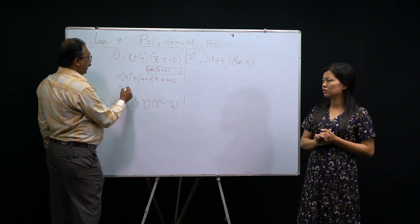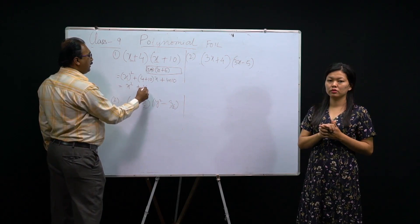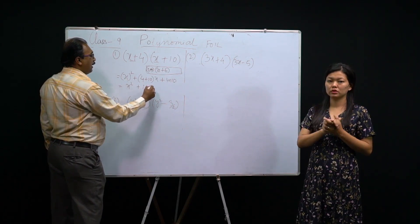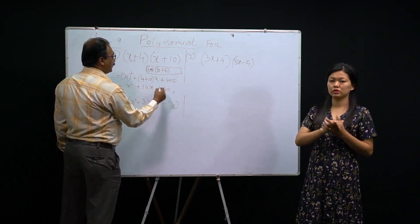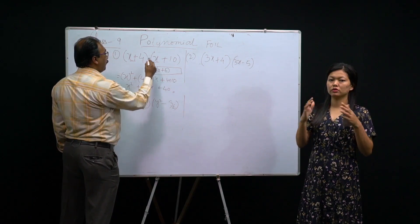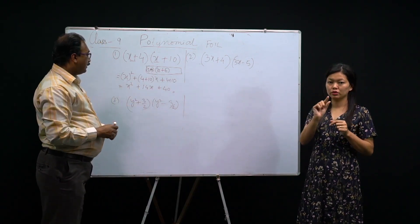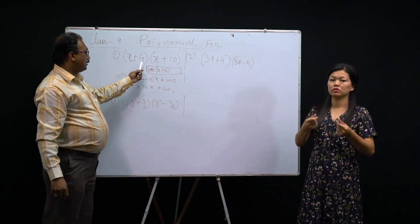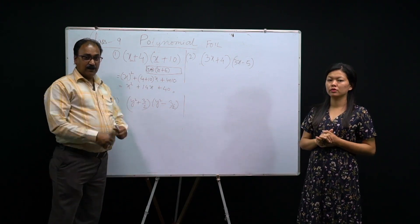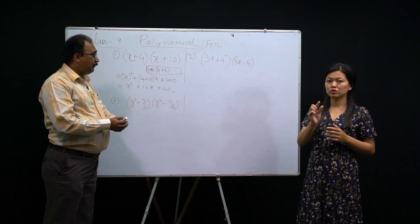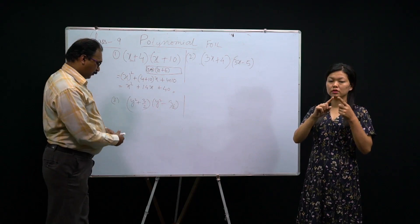So now we write: x² + (4+10)x + 4×10, which gives x² + 14x + 40. This is the answer applying this formula — clear? This is the expanding form using a product identity. We call it 'using identity.'